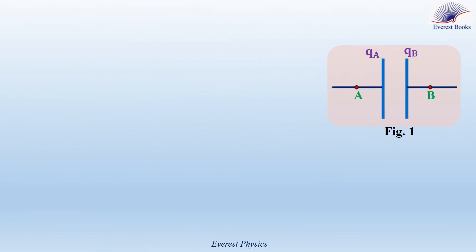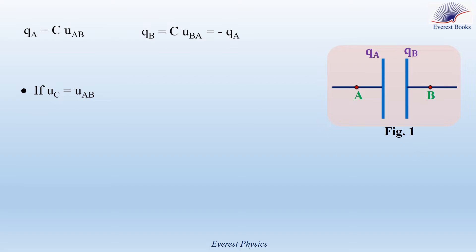Consider a charged capacitor with plates A and B. The charge of plate A is QA, whereas the charge of plate B is QB. Since QA is the charge of plate A, QA is given by C times UAB, where C is the capacitance and UAB is the potential difference between A and B. Similarly, QB is given by C times UBA. We know that UBA equals minus UAB. If UAB is denoted by UC, then QA equals C times UC, or UC equals QA over C.